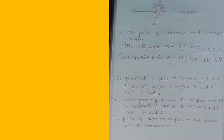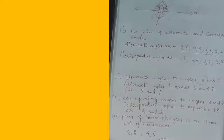The last question of this set: pairs of interior angles on the same side of transversal. On the same side, interior angles 3 and 8 make one pair, and on the other side 4 and 5 make another pair. So the pairs are (3, 8) and (4, 5).